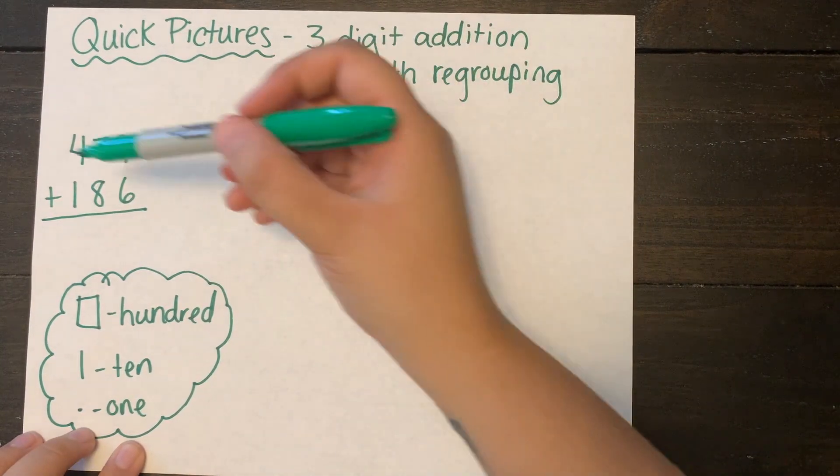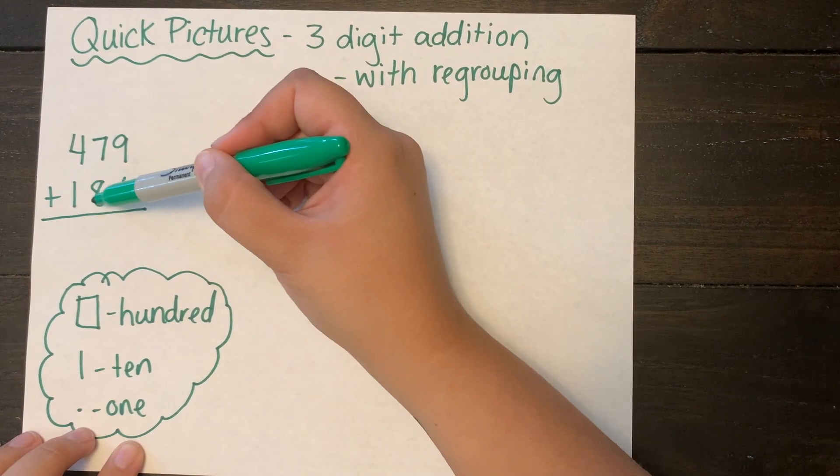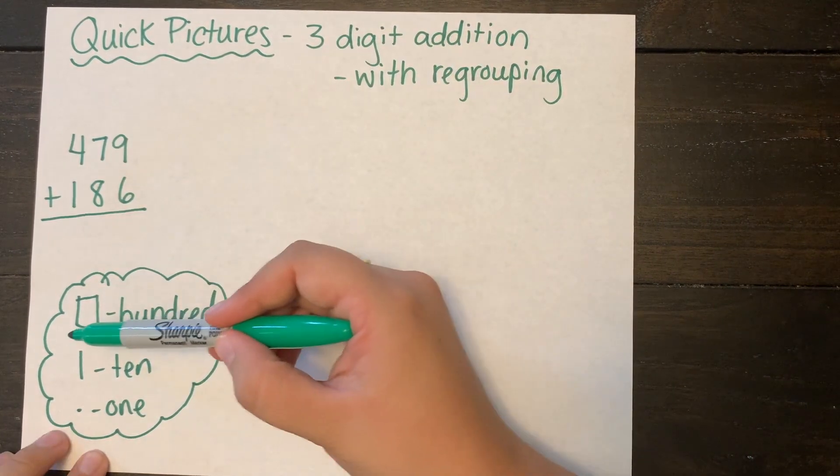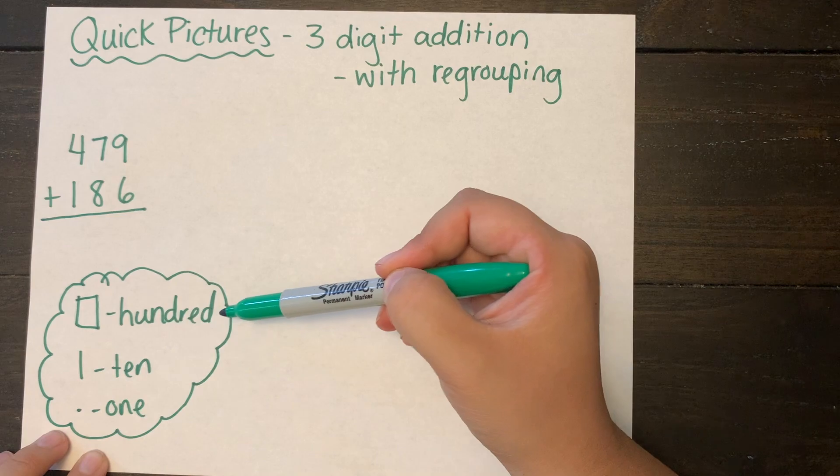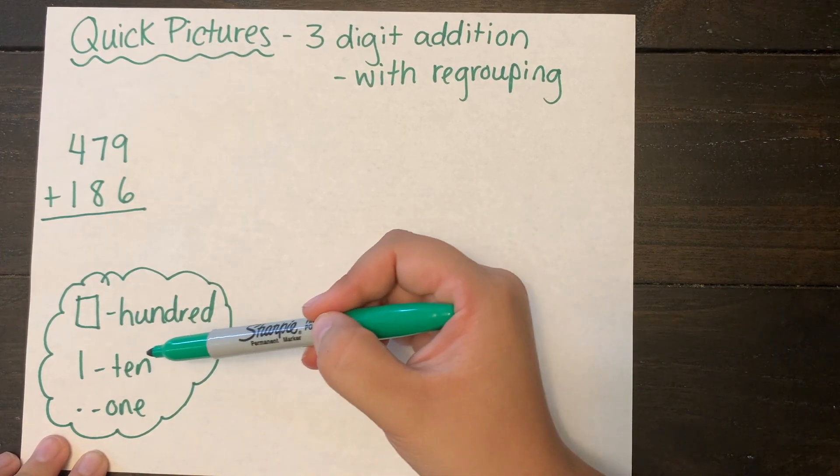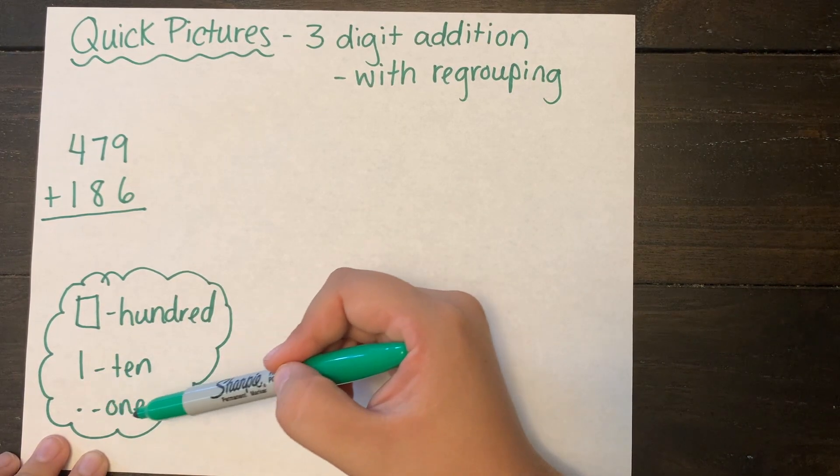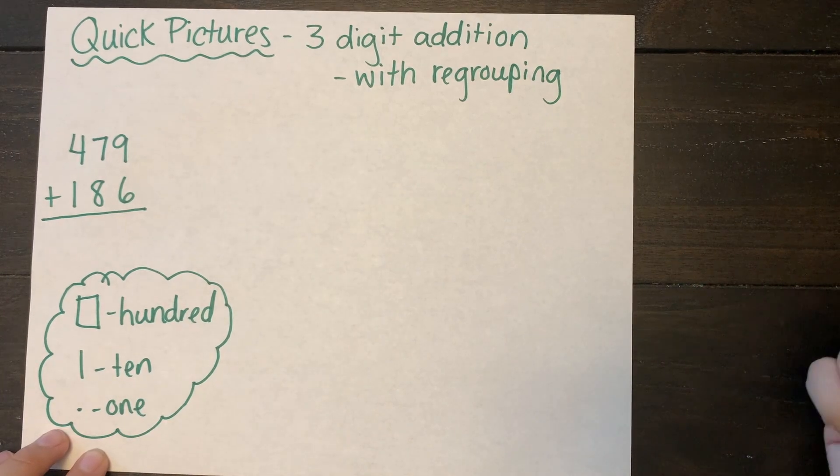So today we're going to be adding 479 and 186. We're going to be using pictures to represent our numbers, the square representing our hundreds, the line representing our tens, and the dot representing our ones.